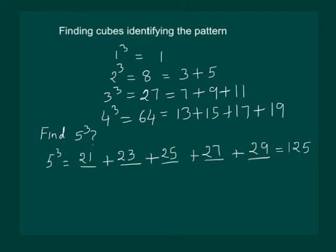So, we have found out 5 cube without multiplying 5 three times. Instead, we have used the pattern of adding the odd numbers. We give this pattern a special name which is adding consecutive odd numbers.